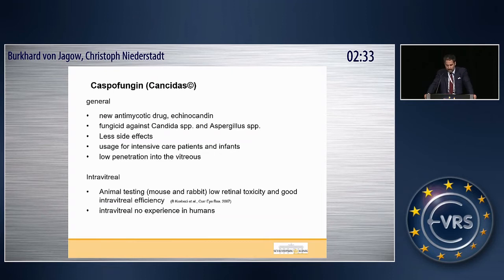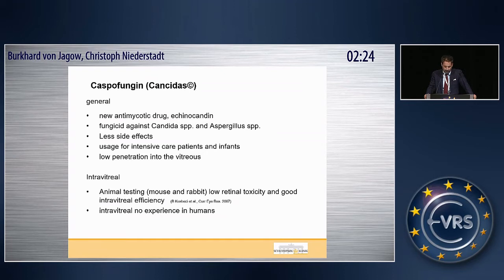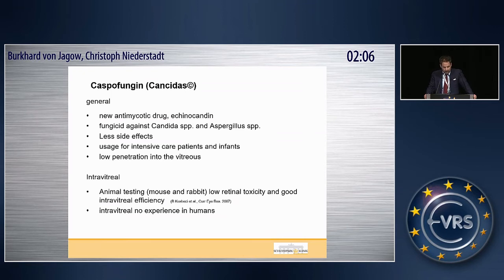Caspofungin is a relatively new antifungal drug that acts as a fungicide — unlike all other antifungals — against Candida and Aspergillus. It most probably has fewer side effects. The reason we don't use it much in ophthalmology is that it has almost no penetration into the vitreous systemically. However, intravitreally, animal testing has shown low retinal toxicity and good intravitreal efficacy.